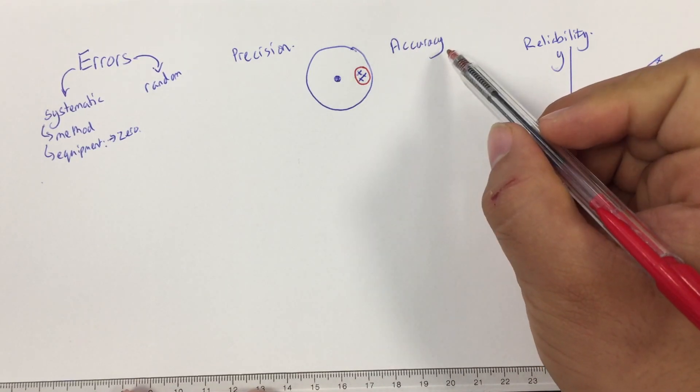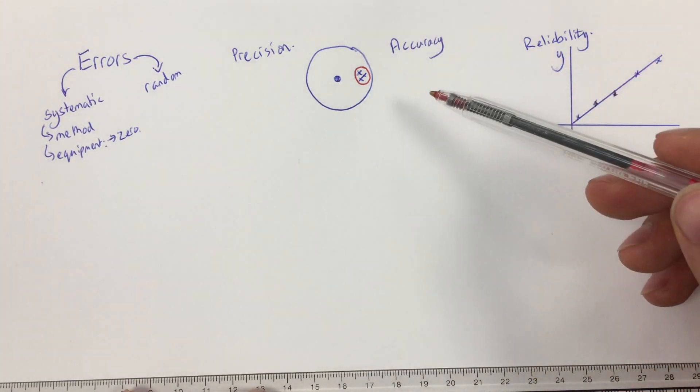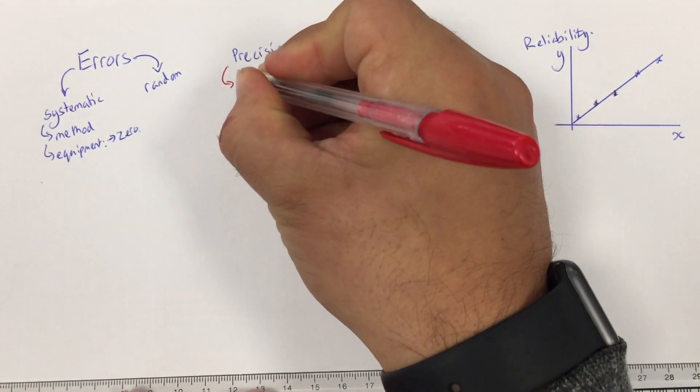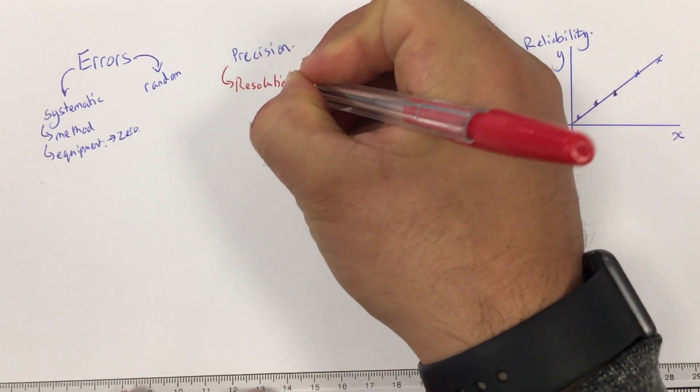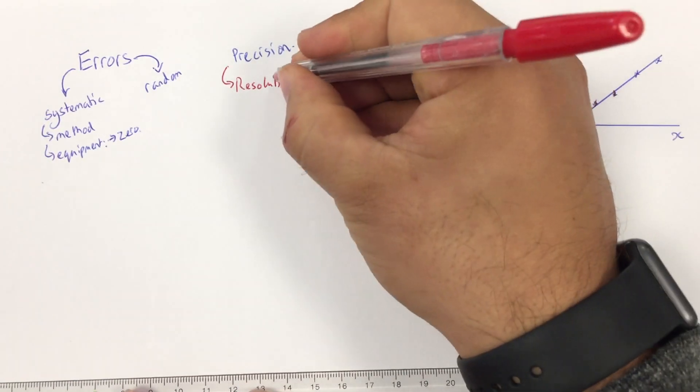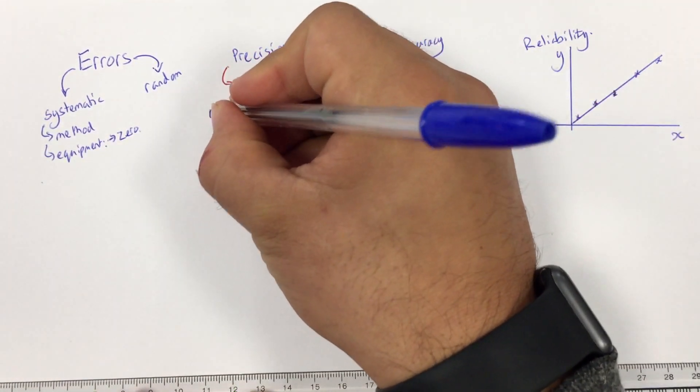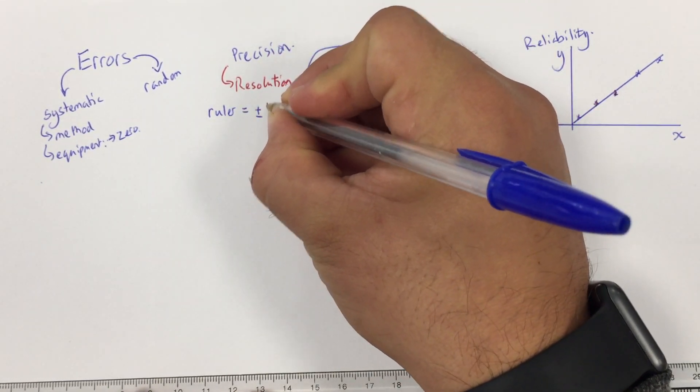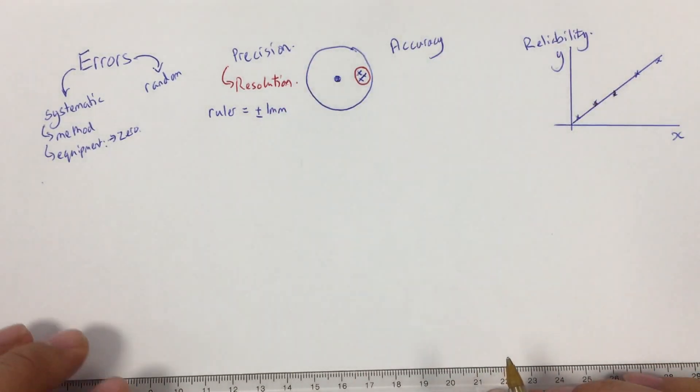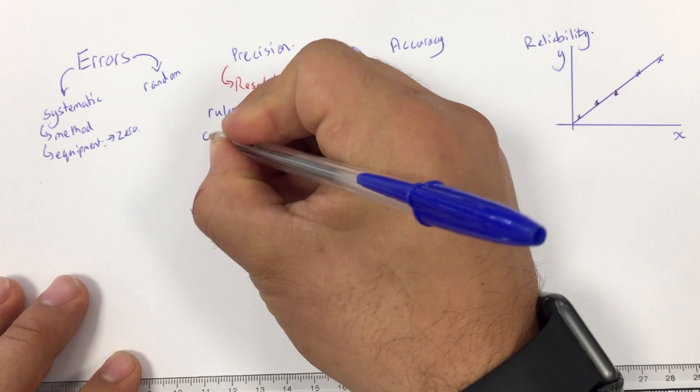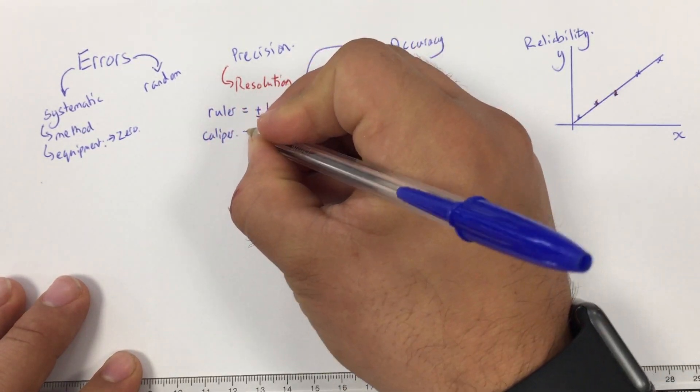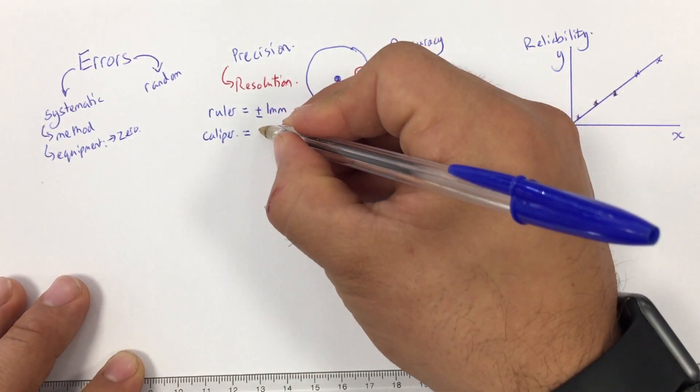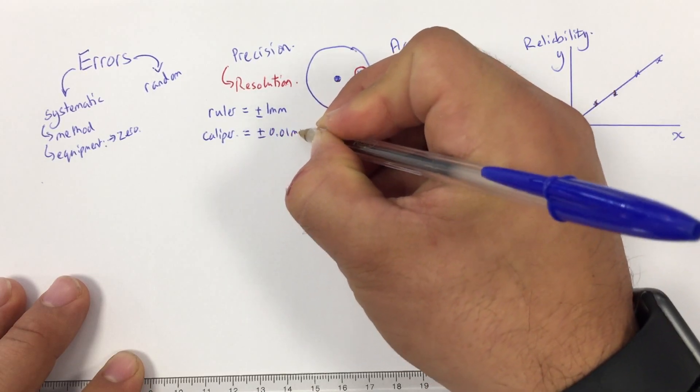So accuracy is how close a value is to its true value, and precision is how closely grouped together they are. Now, precision is intrinsically linked to resolution, which is the smallest value that a piece of equipment can measure. So for example, I could use a ruler, which has maybe a precision, a resolution of plus or minus one millimetre. That might be the best that it could do. But equally, I could use, say, a caliper, and I could then get an improvement in my resolution, which might be 0.01 millimetres.